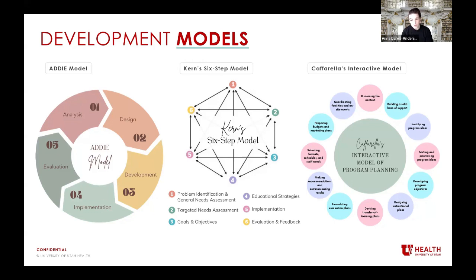The main difference between those two is that the analysis phase in the ADDIE model is split into two in Kern's model. This model follows six steps: one, problem identification and general needs assessment or contextual analysis; two, targeted needs assessment; three, goals and objectives; four, educational strategies; five, implementation; and finally, six, evaluation and feedback. I'd also like to mention Cafarella's interactive model of program planning, which provides an interesting approach with no particular beginning or ending and places decision-making in the hands of the program planner.